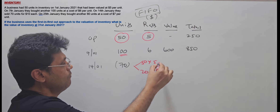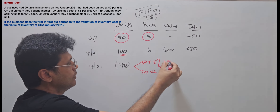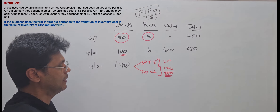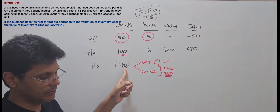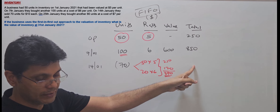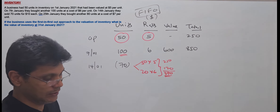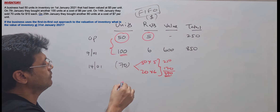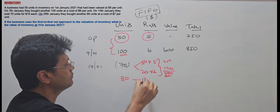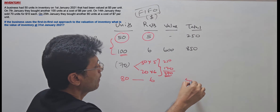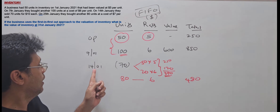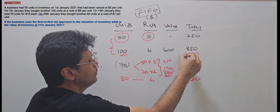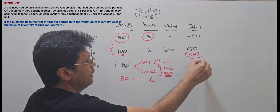So the total cost of sales for the 70 units is $250 plus $120, which equals $370. The closing balance after the sale: 150 total units minus 70 sold leaves 80 units. These 80 units are valued at the rate of $6, giving a closing balance of $480. This can also be verified as $850 minus $370 equals $480.